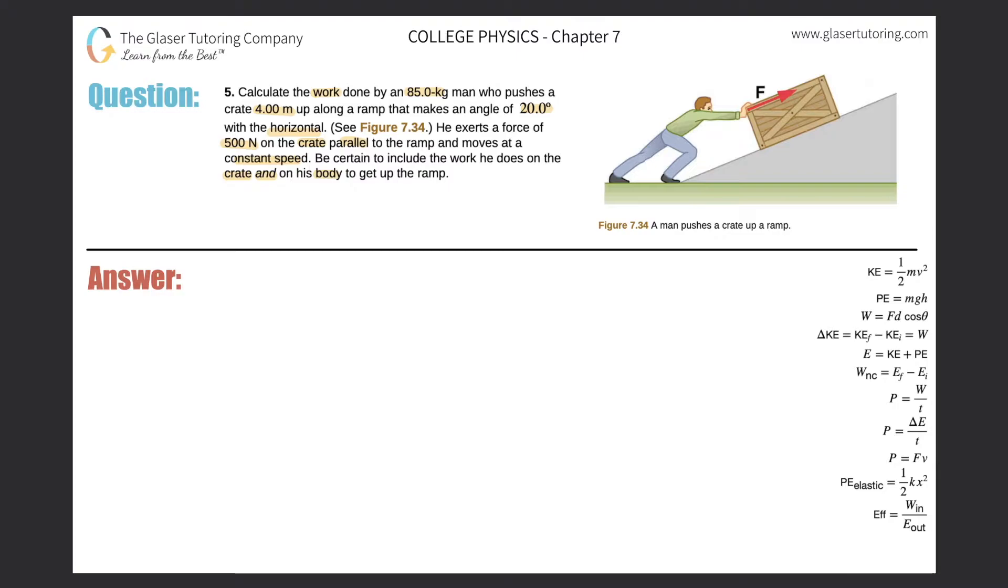One, there is a crate in which he is applying a force to that is moving up this ramp, and the force that he applies to the crate is parallel to the slope of this hill. Looking at this formula down here, work is equal to force times distance times the cosine of the angle between the force vector and the distance vector.